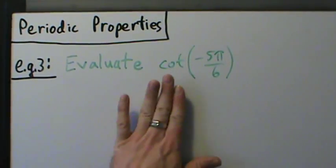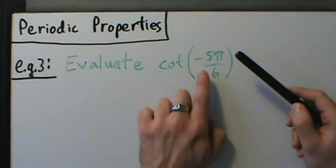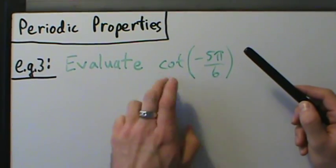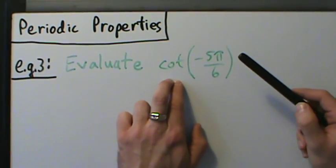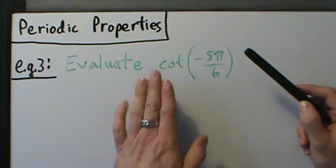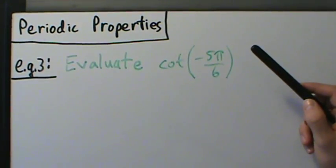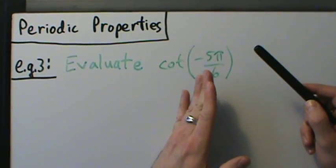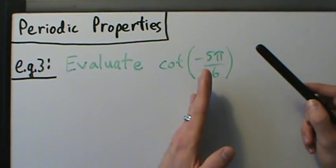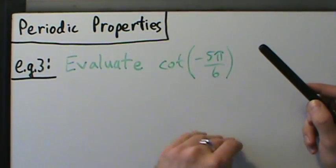We approach it the same way: we want the cotangent of negative 5π over 6. The period of cotangent is π. We ask ourselves, is negative 5π over 6 larger than π or smaller than 0? When we answer that question, we can add or subtract π as often as needed.